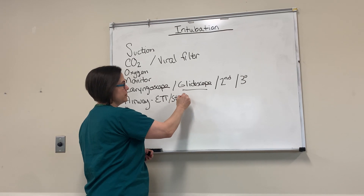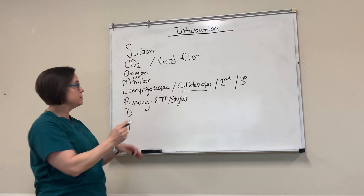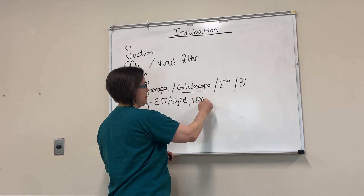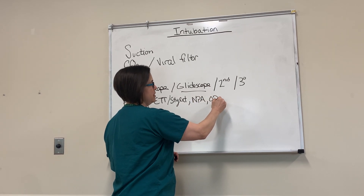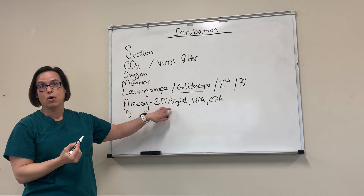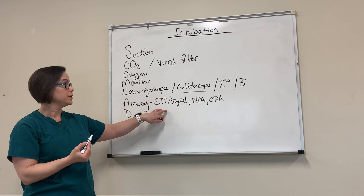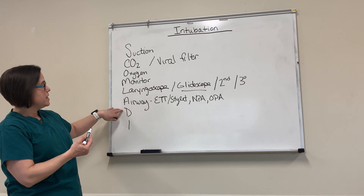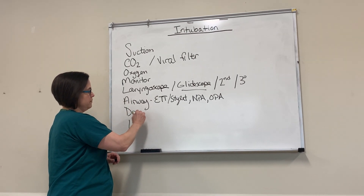The next thing is airway. Here I'm talking about my ET tube, the correct stylet that goes with your ET tube, but also nasopharyngeal airways and oropharyngeal airways. Make sure you have all of those things available to you.